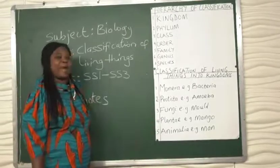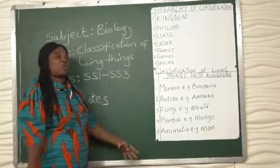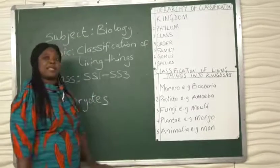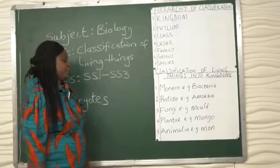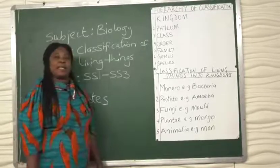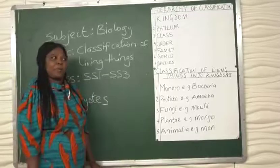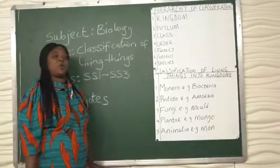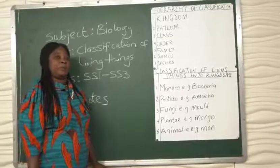You have the next kingdom plantae. The plant group starting from the lowest to the largest plants. Example is the mango. The next kingdom is the kingdom animalia. And of course we know that there are so many animals in the world, including human beings.